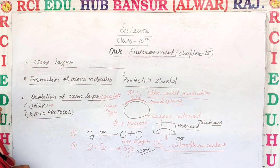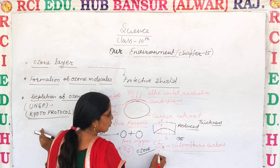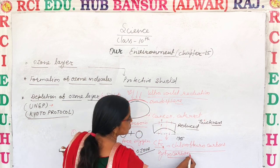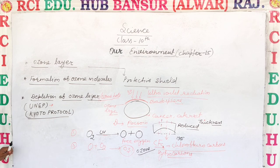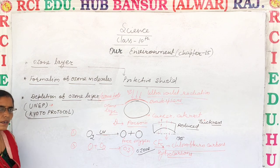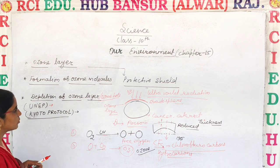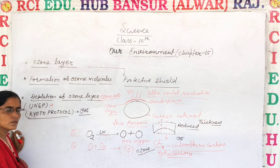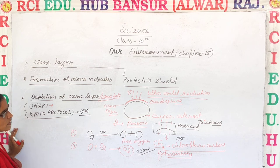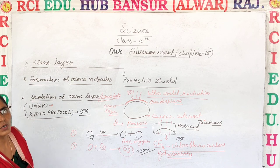UNEP — the United Nations Environment Programme — identified the harmful chemicals responsible for ozone depletion, including CFCs and certain hydrocarbons containing hydrogen, oxygen, and carbon. They decided to ban CFCs and organized a protocol in 1986 in which many countries participated. They agreed to stop or reduce CFC production in order to protect the ozone layer.